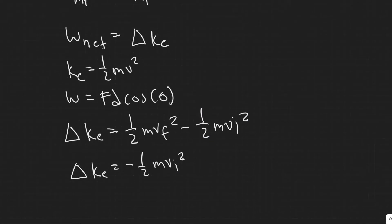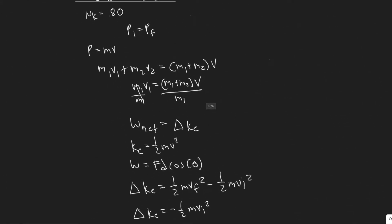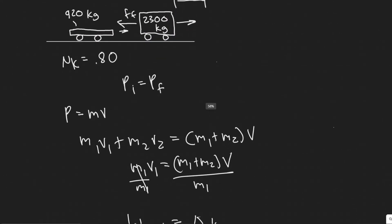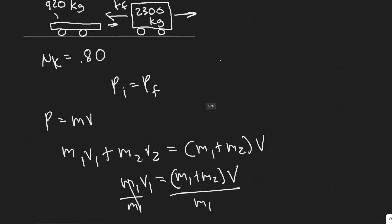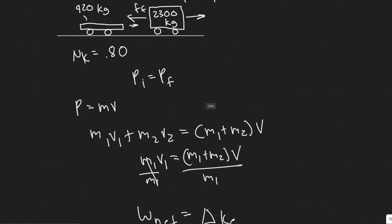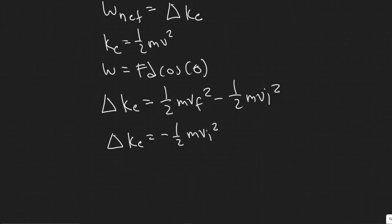Notice that M here is the mass of both cars combined, because at this point they're locked together. So when referring to this M, we know their masses are combined.